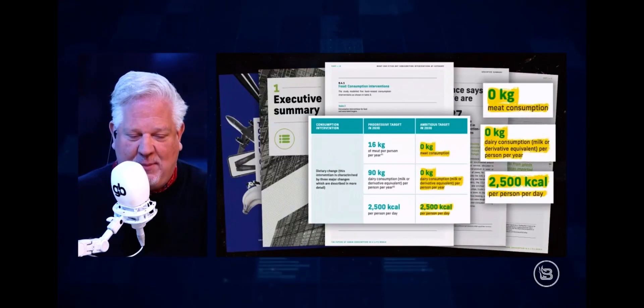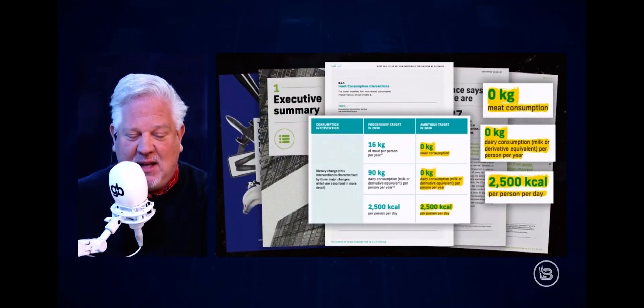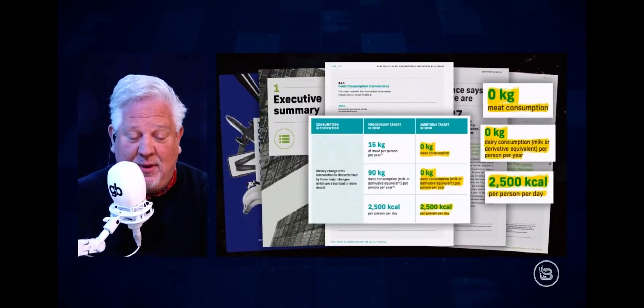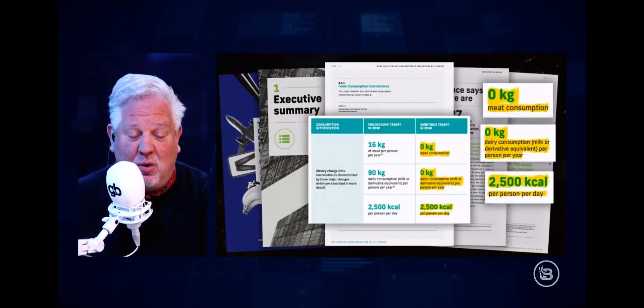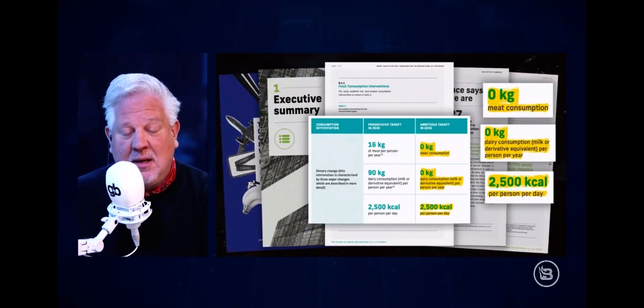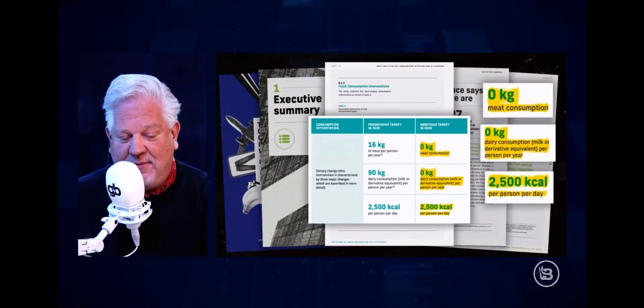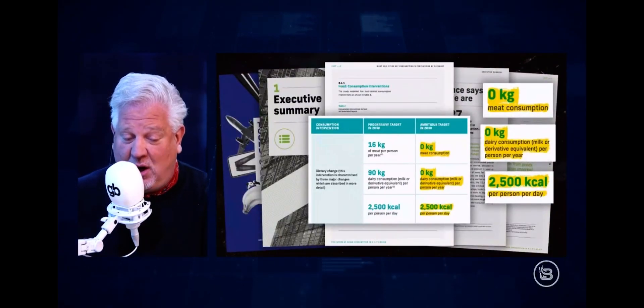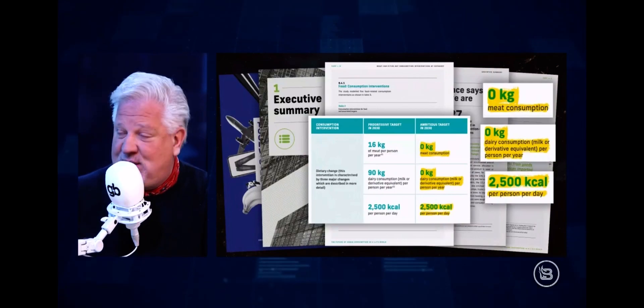Again, on their own website, 16 kilograms, that's all you can have of meat. Right now, the dairy consumption, milk or derivative equivalent, so cheeses and everything else. They're hoping that you will only have 90 kilograms of that, but their aggressive, ambitious target for 2030 is zero.